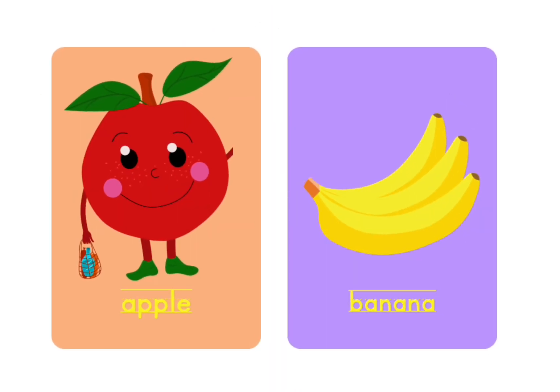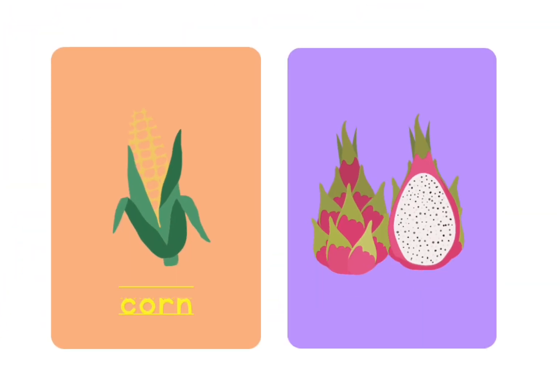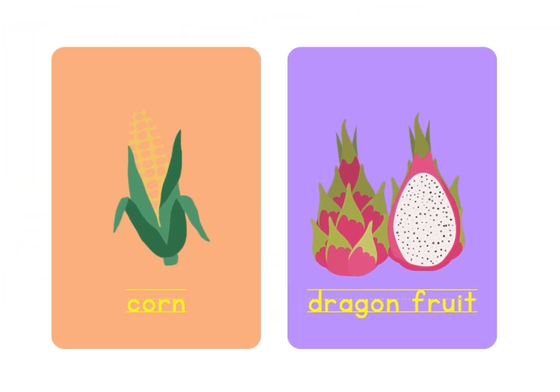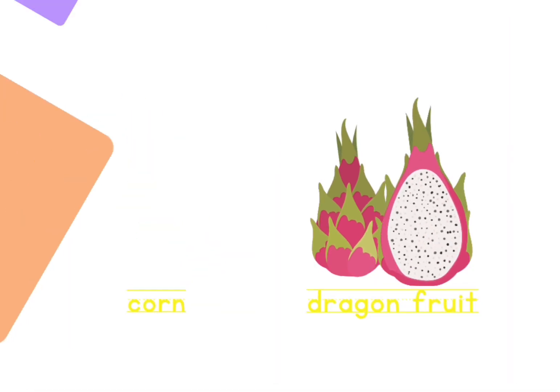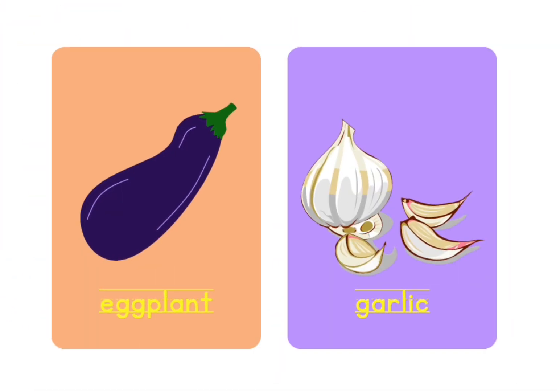A for Apple, B for Banana, C for Corn, D for Dragon Fruit, E for Eggplant.